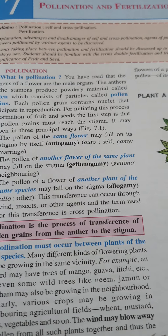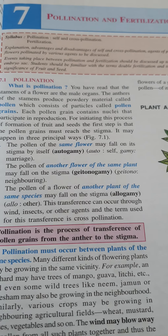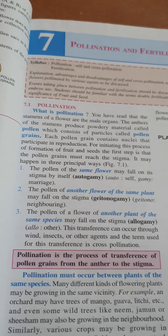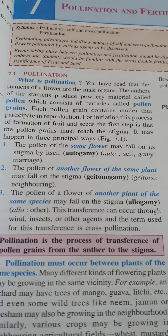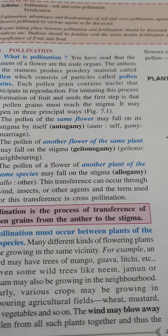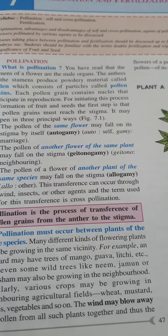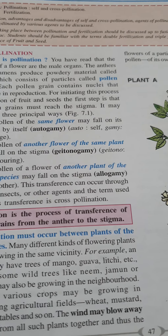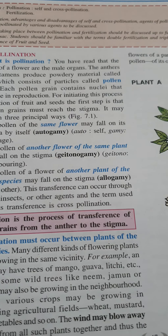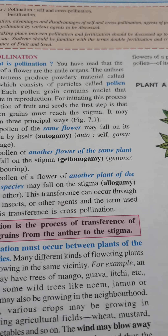Plants have various adaptations to accomplish their task. Flowers depend on certain pollinating agents, which can either be biotic or abiotic. These biotic or abiotic pollinating agents are collectively termed as pollinators. Pollination is a biological process in which pollen grains are transferred from an anther — the male part of a flower — to the stigma — the female part. Yeh do tarah se hota hai: self-pollination aur cross-pollination.